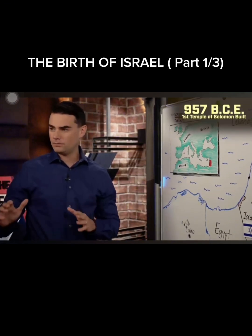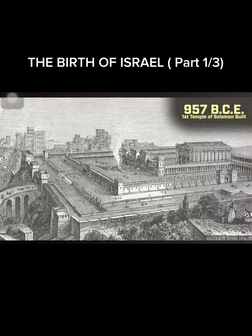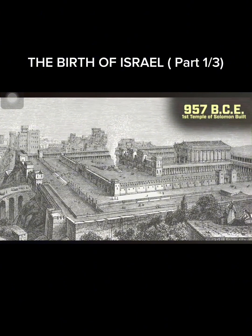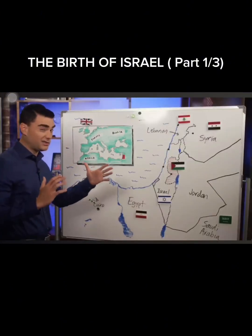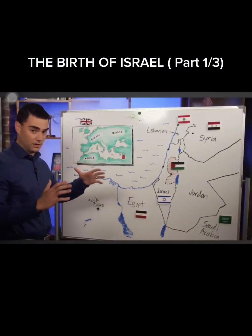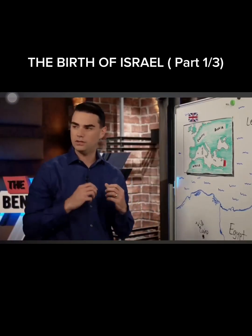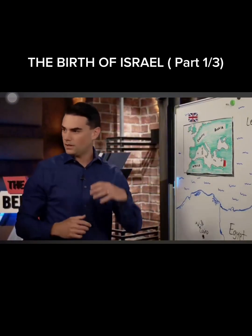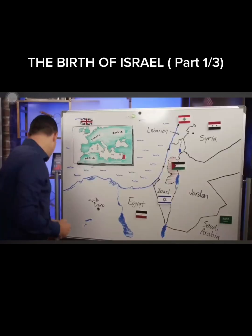By 957 BCE, the first temple of Solomon is built in Jerusalem. This is still a good 1,600 years before the rise of Islam. There is a lot of infighting among the Jews, and there's a separation between the kingdom of Judah and the kingdom of Israel — those are two separate kingdoms.